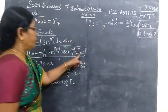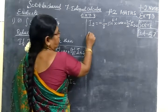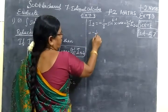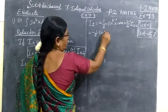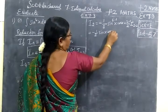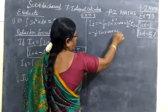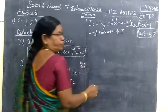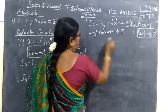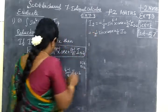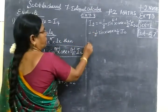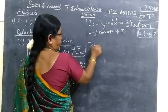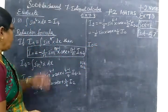N is 2. So equal to minus 1 by 2 sin^{2-1}, that's 1. So sin x cos x plus 1 by 2 I₀. Now we want to find I₀.